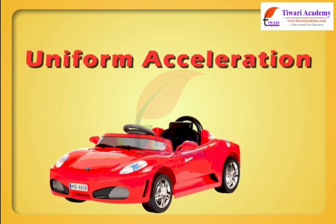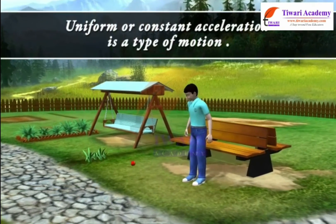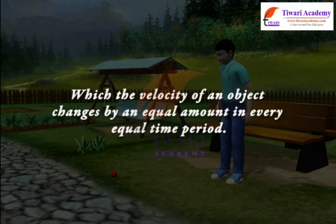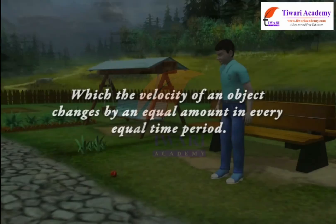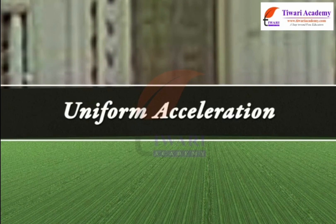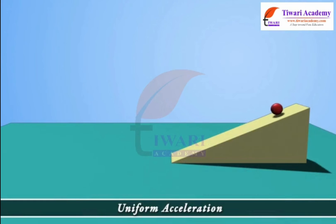Uniform acceleration. Dear students, uniform or constant acceleration is a type of motion in which the velocity of an object changes by an equal amount in every equal time period. When a body travels in a straight line and its velocity changes by equal amounts in equal intervals of time, then it is said to have uniform acceleration. A body falling freely under gravity has uniform acceleration. A ball moving down an inclined plane has uniform acceleration.